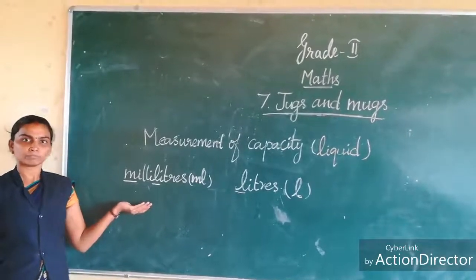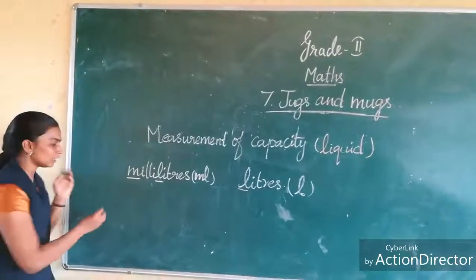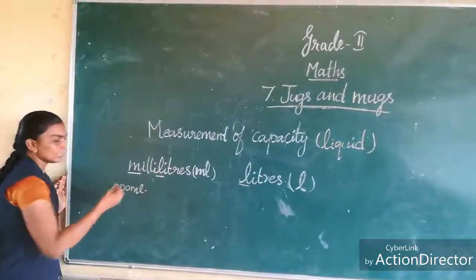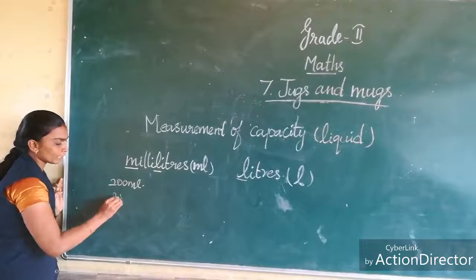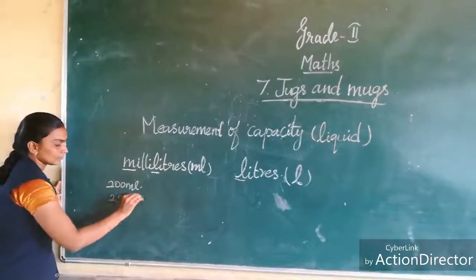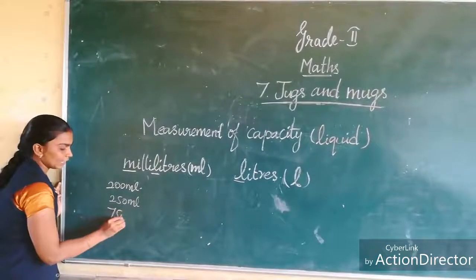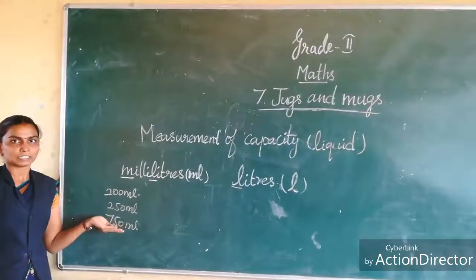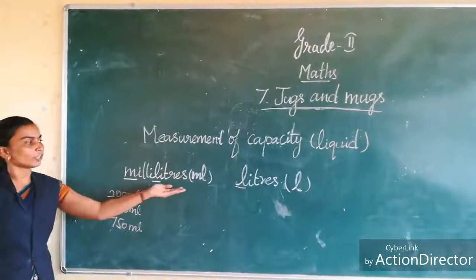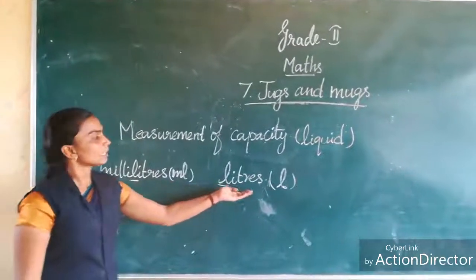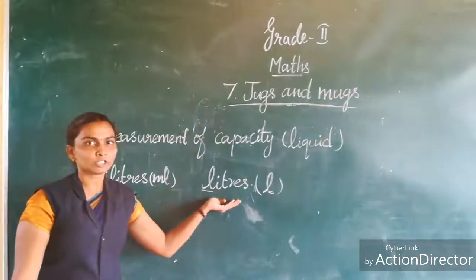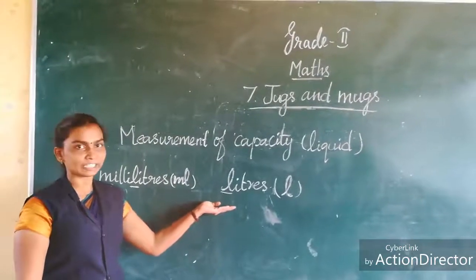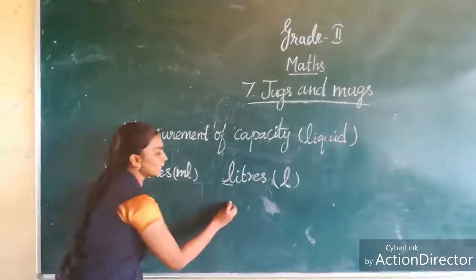Did you see milk packets? They have 200 ml written on them. In juice cartons also, they have written 250 ml or 750 ml. That is a small quantity, so they are represented in ml. For large quantities, we denote them in liters.